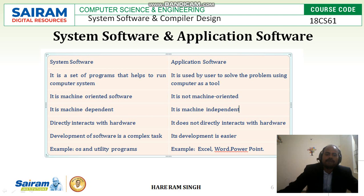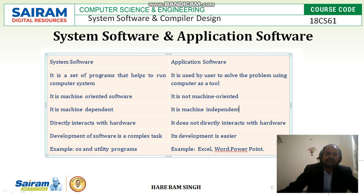System software directly interacts with the hardware, but application software does not directly interact with the hardware. In system software, development is a complex task — a very large number of lines of code are required for system software. But compared to that, application software is much easier and very few lines of code are needed. Examples of system software: operating system, utility programs, debugger, linker, loader, assembler, and compilers. Examples of application software: Excel, Word, PowerPoint, mobile applications, and desktop applications.